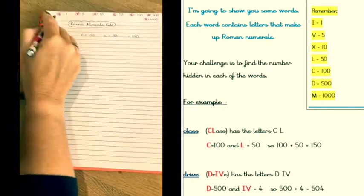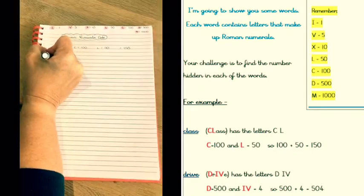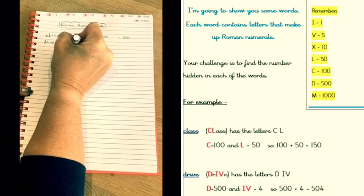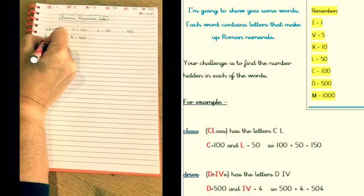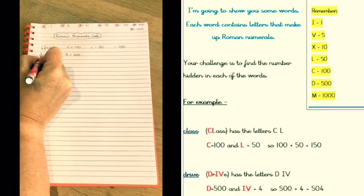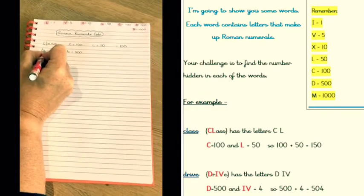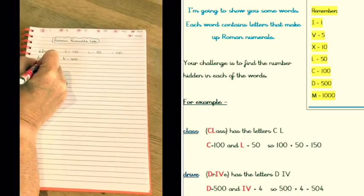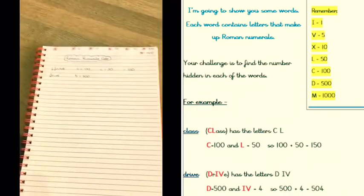D is a Roman numeral, so D equals 500. R is not. I've got I and V together, and I know about I and V, so I'll highlight those two.